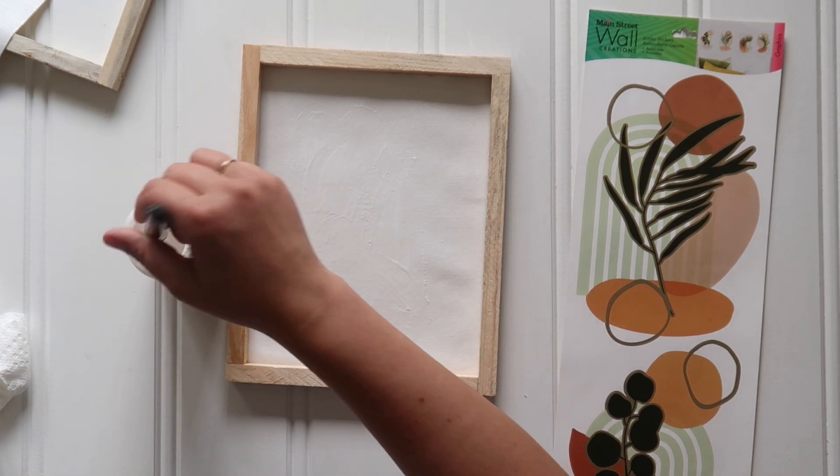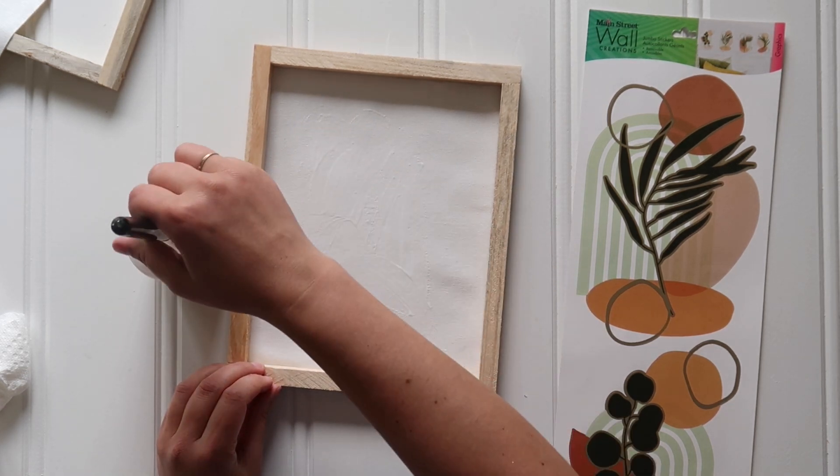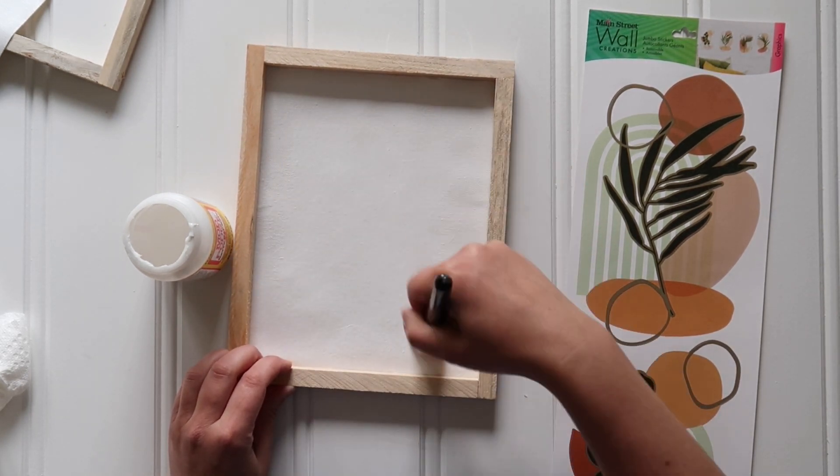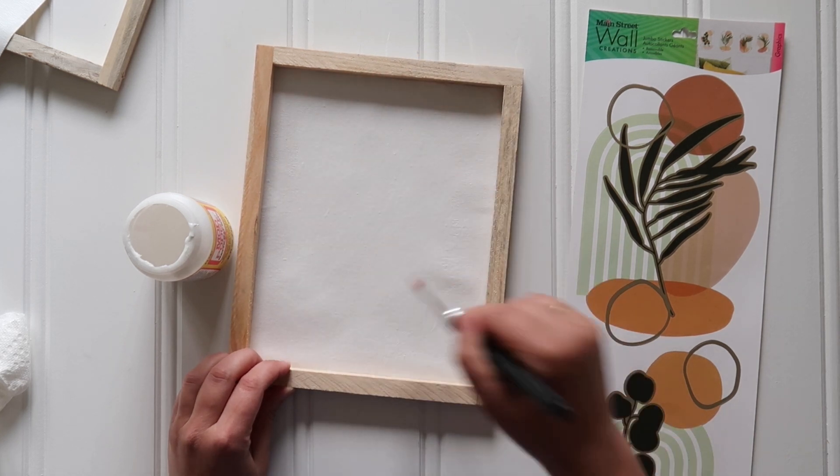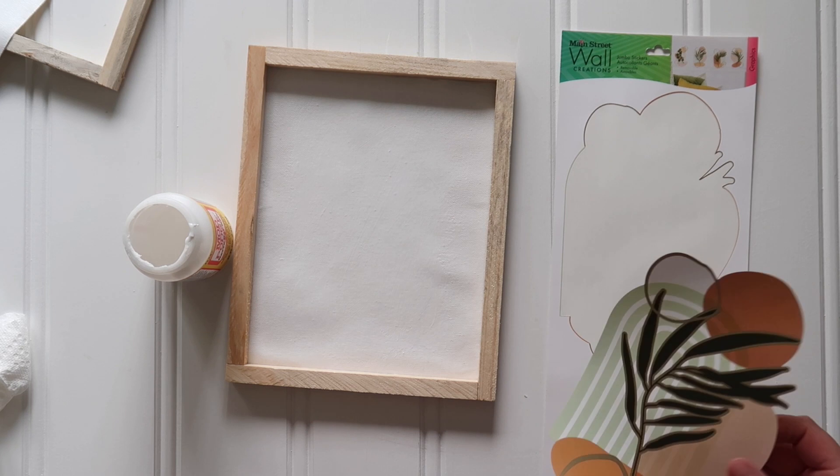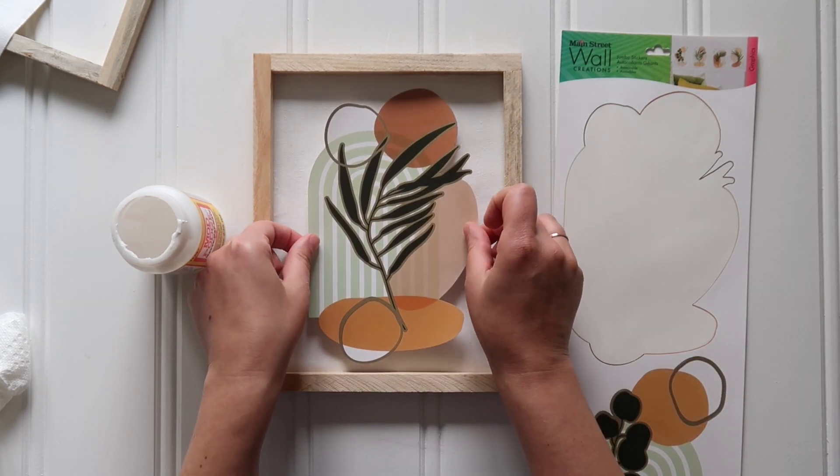Just add a quick coat of Mod Podge, and because we did that first base coat, you don't have to get all the way to the edges. So it's a lot easier—just do a nice even coat of Mod Podge there and then smooth that decal right into place.